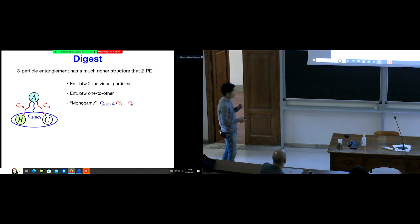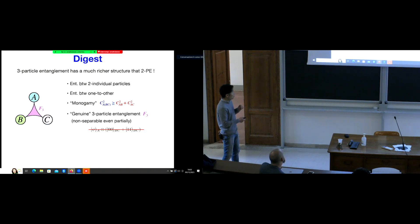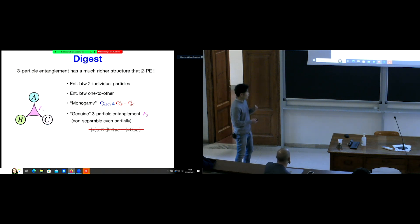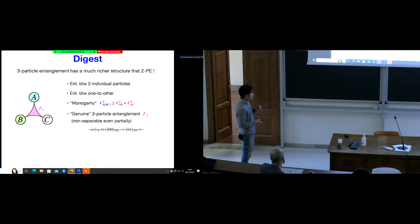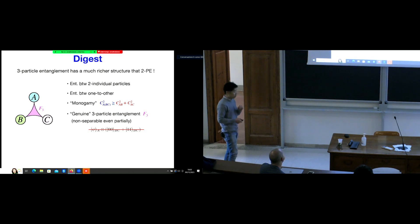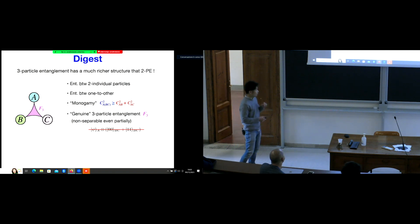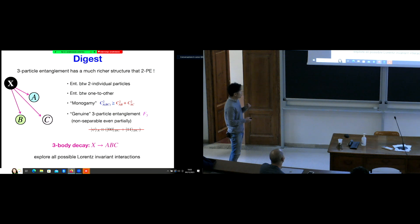We can discuss interesting relations between one-to-other entanglement and individual entanglement — this is called monogamy. We can also talk about genuine three-particle entanglement, which is entanglement genuinely between A, B, C: non-factorizable even partially. For example, a state where B and C are non-factorizable but A is factorizable is forbidden for genuine three-particle entanglement. This talk studies such entanglement in three-body decay.